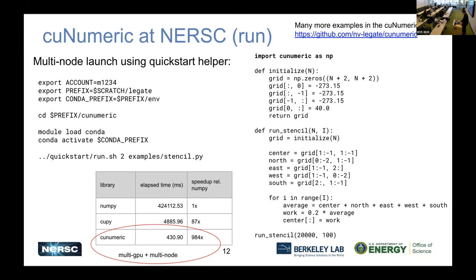I'm not saying every application you convert to CuNumeric would get a 1000x speedup, but I think it's really cool to look into this.